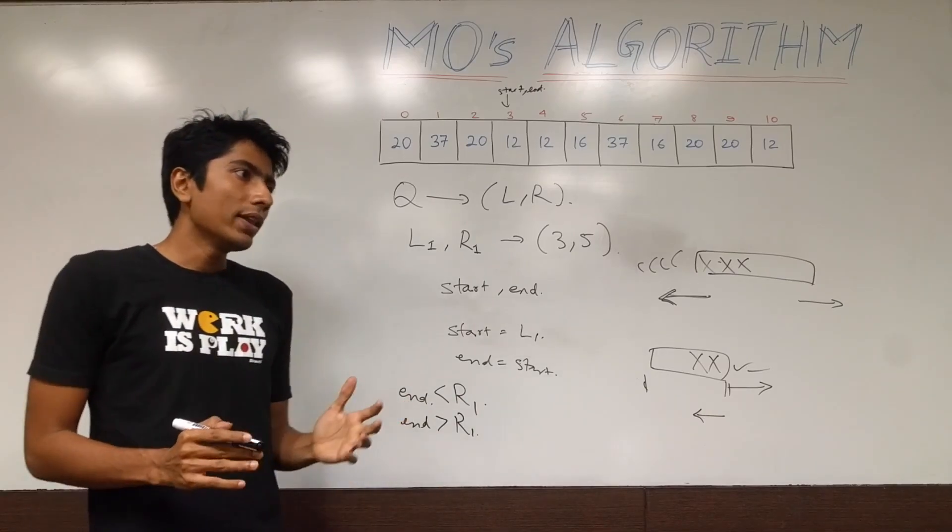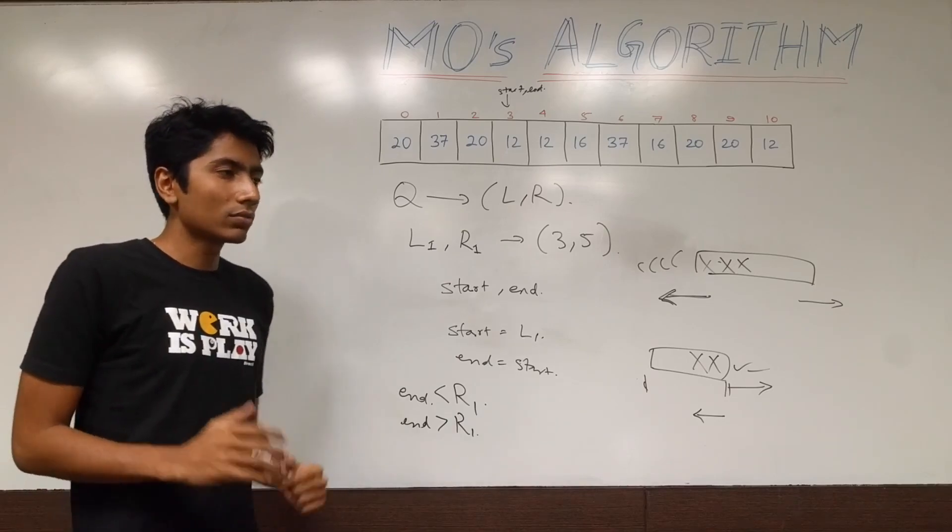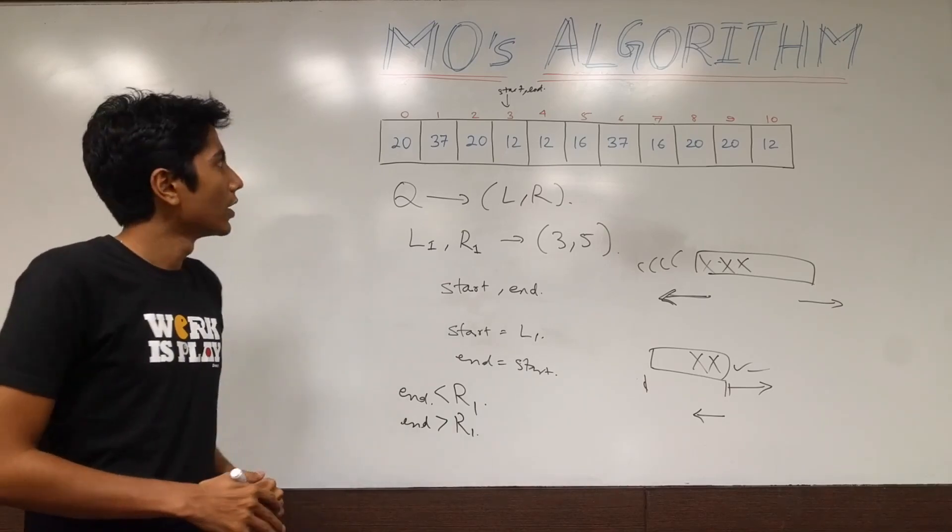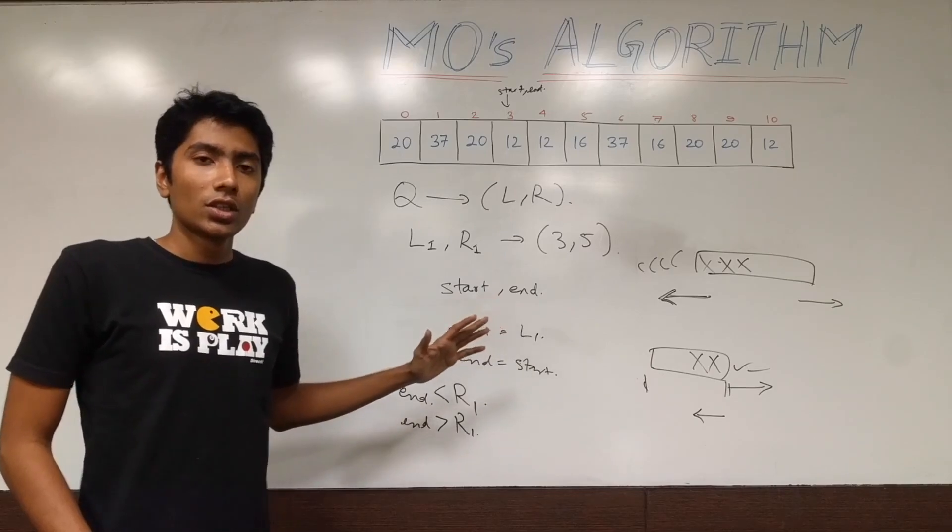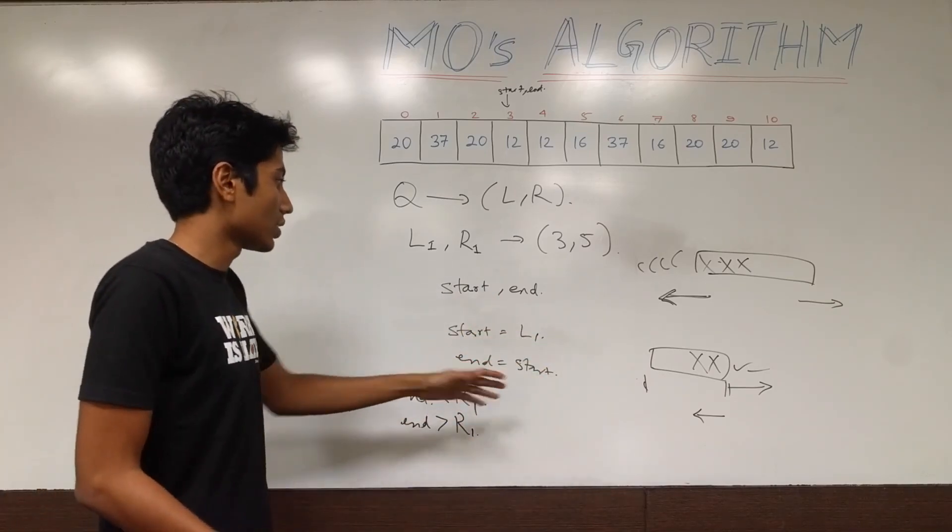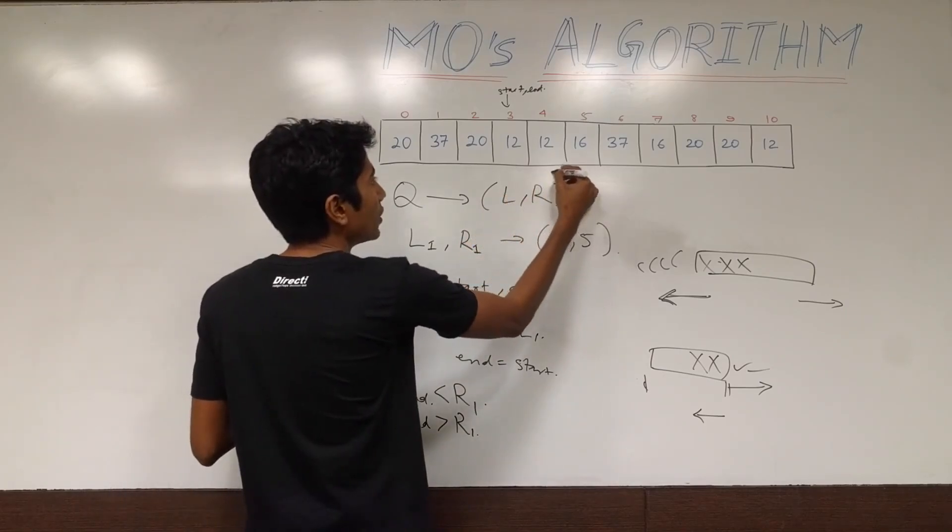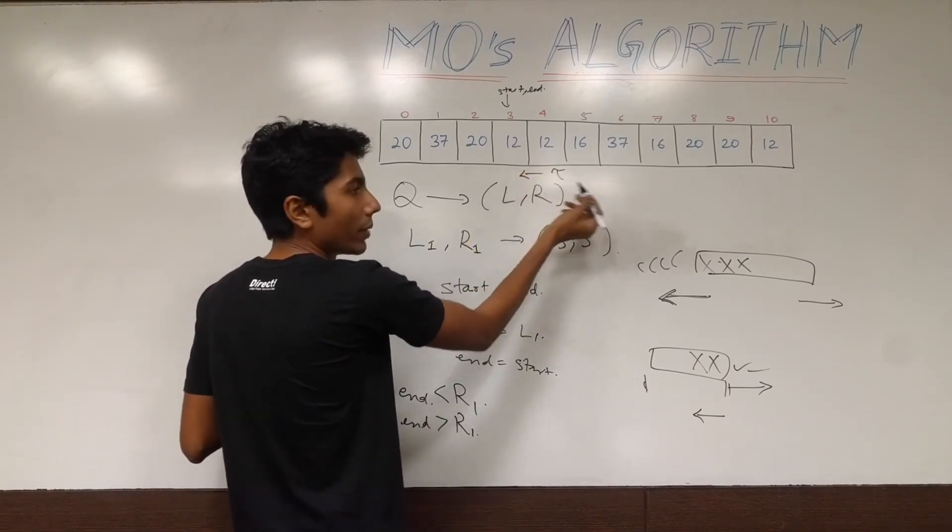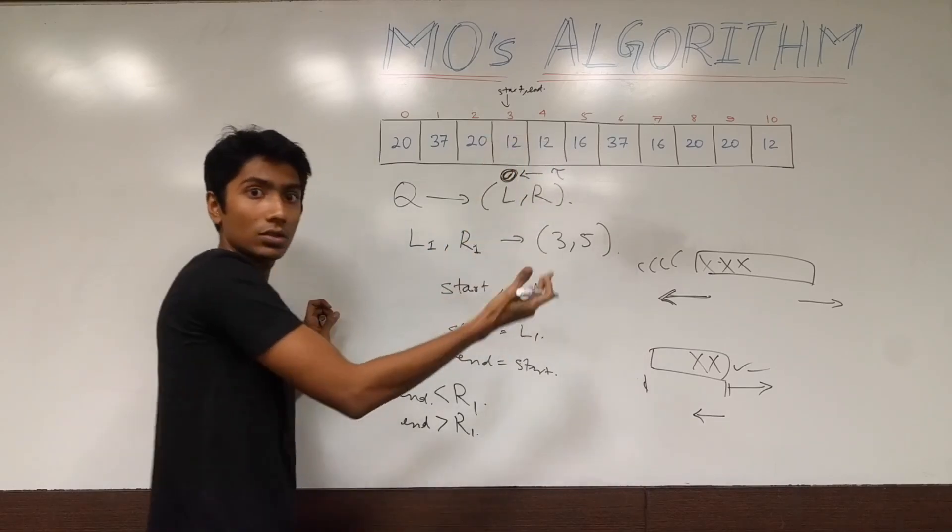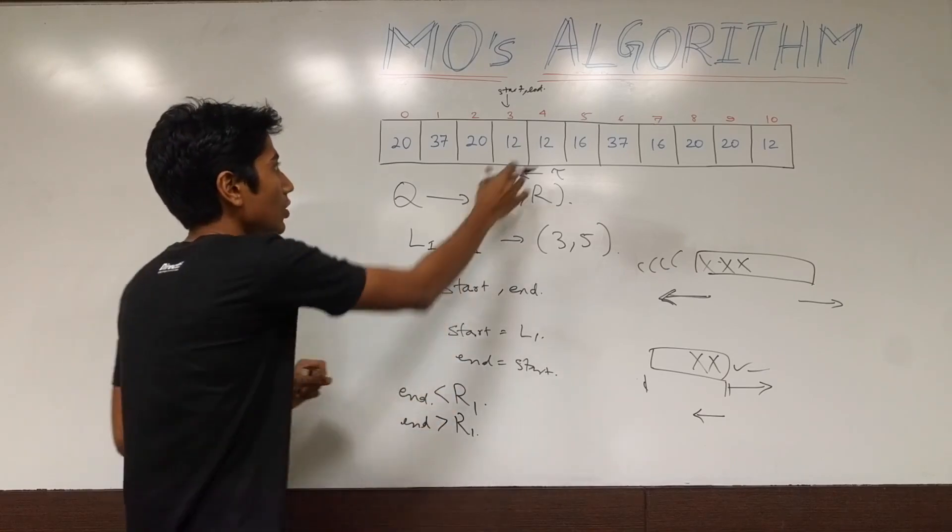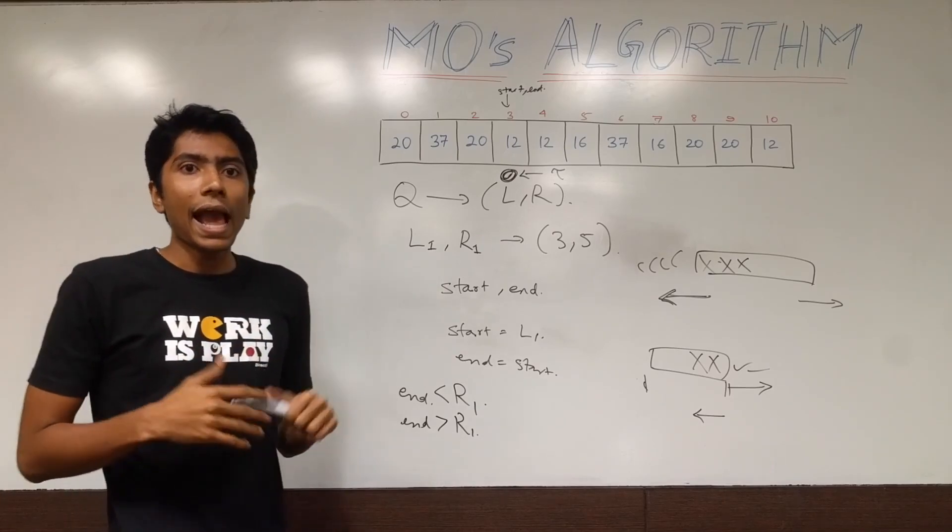And had it been the other way around, had end been greater than r1, then we needed to decrement end and remove elements from the set. And what I mean by set? Well, you could use a set data structure which is going to have distinct elements only, but that's going to be very difficult to maintain. Reason being that elements are occurring multiple times and we are doing add and delete operations. So you might delete an element which has occurred many times by just getting rid of the range for just one of those elements.